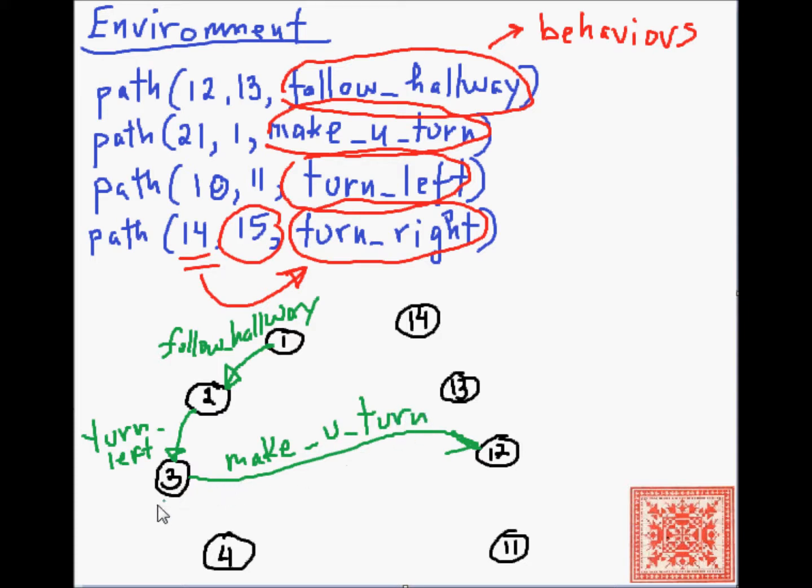From two to one, if you go from two to one, follow hallway may or may not work. It may work, and it may not necessarily work. When you detect three, and you want to get to twelve, then make a U-turn. If you detect three, and you want to get to four, then you again follow hallway. And from four to eleven, you also make a U-turn. And these behaviors are the procedures that a service robot can reliably execute.